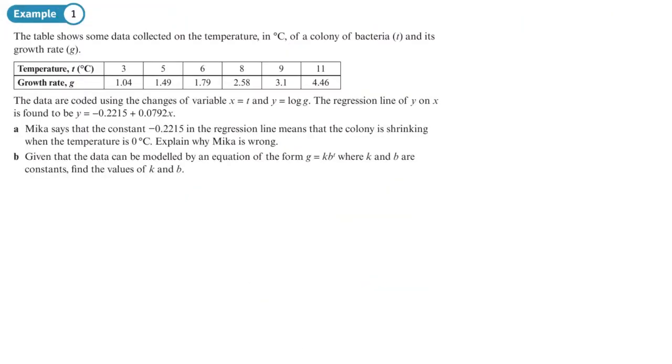On to an example here. We've been given some information. So x is t, y is log g. G is the growth rate, t is the temperature, and it's coded so we end up with this equation. In part a, this person thinks that the constant minus 0.2215 means the colony is shrinking. Explain why Mica is wrong.